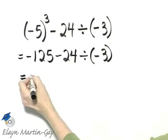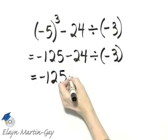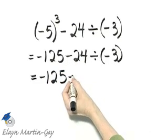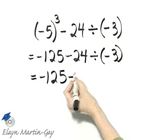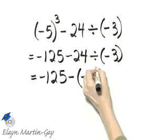Let's write this down very slowly. Negative 125 minus—I have not performed the subtraction yet, I'm rewriting this sign—and then remember the result of our division was negative 8.